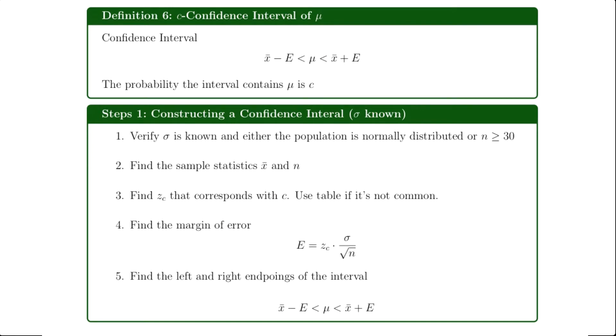So the first thing that we're going to do is verify the population standard deviation is known and that either the population is normally distributed or the sample size is greater than 30. The next step is you're going to find the sample mean and note the sample size.